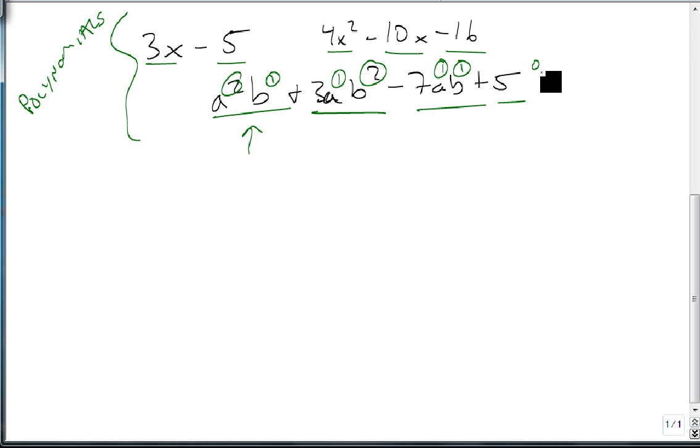The degree of a polynomial is the highest degree of the monomials. So this is a degree 1 and a degree 0, so the whole thing is degree 1. This is a 2, a 1, and a 0, so this is degree 2. a squared b is degree 3. ab squared is degree 3, and so this is a degree 3 polynomial.